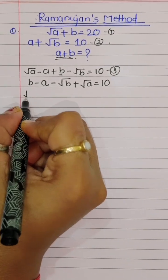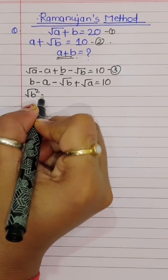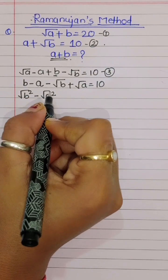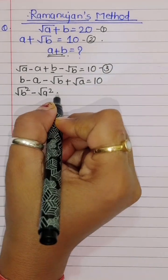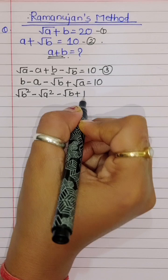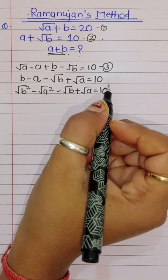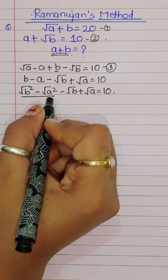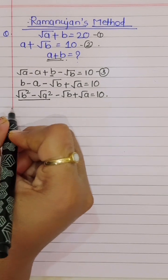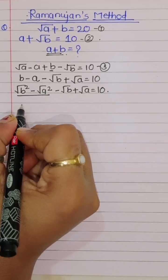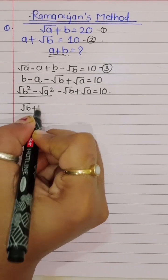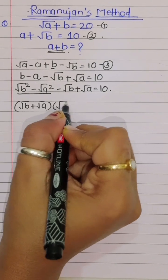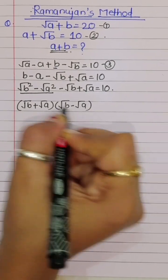We can write b as square root of b squared, and a as square root of a squared. So we have: square root of b squared minus square root of a squared, minus square root of b plus square root of a, is equal to 10. Applying the a squared minus b squared formula — that is (a+b)(a-b) — we get: square root of b plus square root of a, times square root of b minus square root of a.